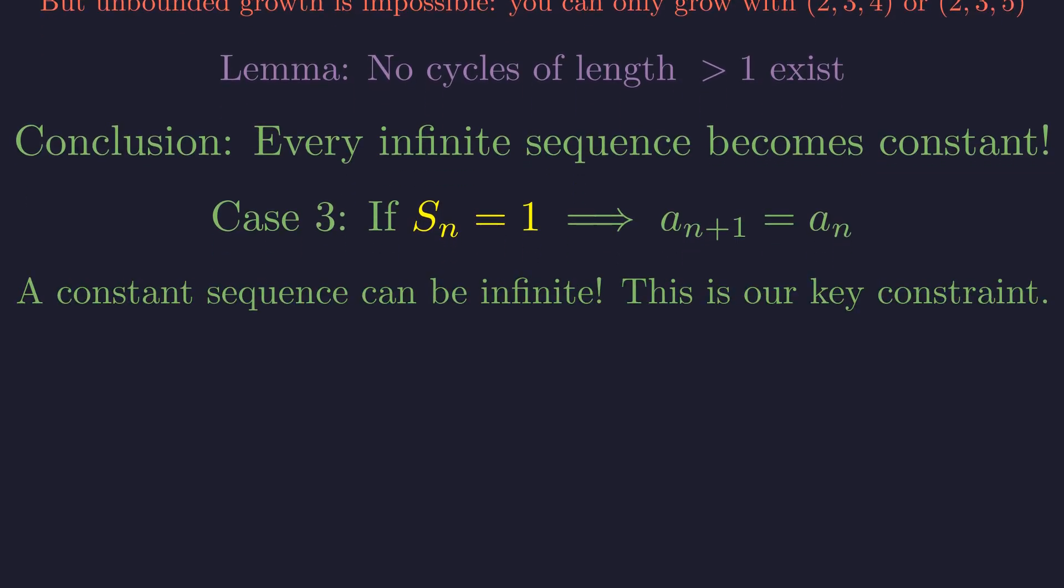A number whose three smallest non-trivial divisors satisfy this property will generate a constant, and therefore infinite, sequence. So, the core of the problem is to find all numbers A, such that if a_n equals A, then a_{n+1} also equals A. We will call these numbers stable.